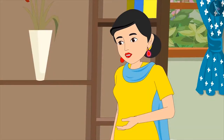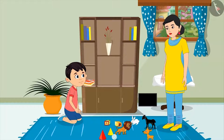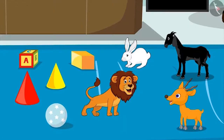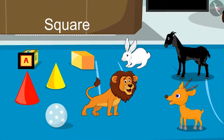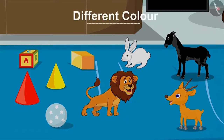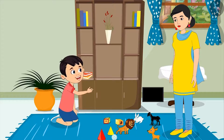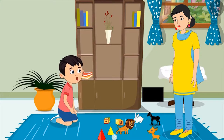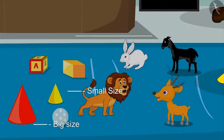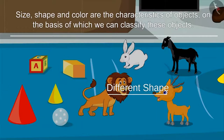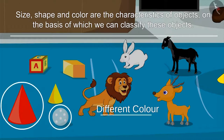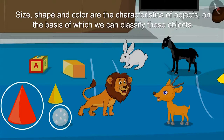Very good, Chotu. Let's look at these toys now. The shapes of all these toys are different — one is round like a ball, while another one is square like your book. And their color is also different. Big or small size, different shape, or different color — these are the characteristics of these objects, on the basis of which we can differentiate and classify them.